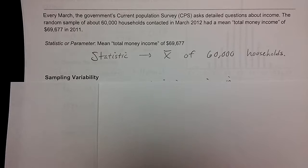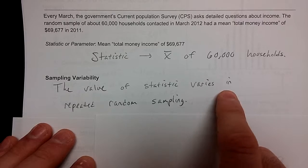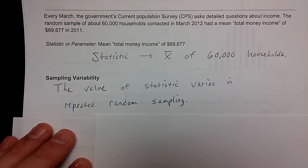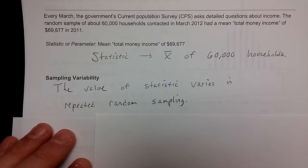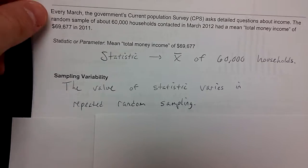All right, sampling variability. If you were to do that sample multiple times with different households of 60,000, if you do that multiple times, you're not going to get the same mean every time. And that's okay. That's what's called sampling variability. It's the value of a statistic varying in repeated random sampling. So the more times you sample something, you're going to have a variation of what the statistic is going to be. And that's going to create what's called our sampling distribution.